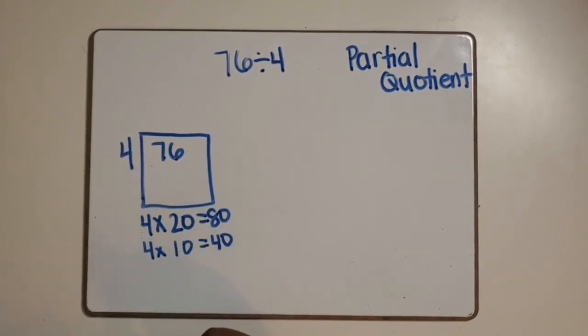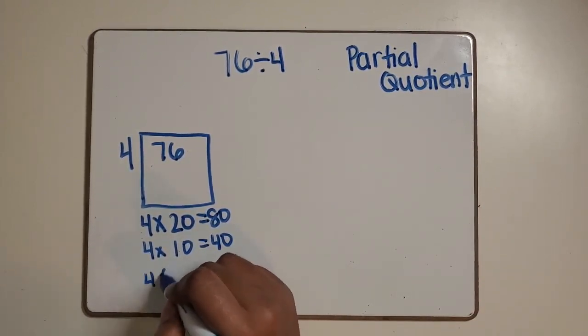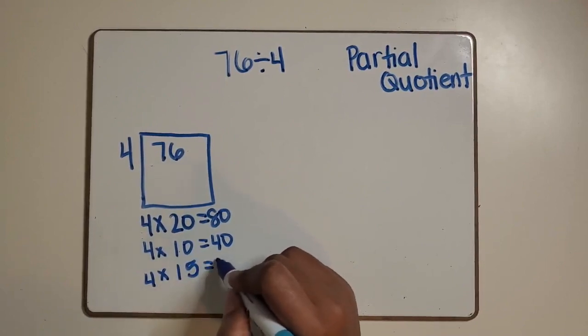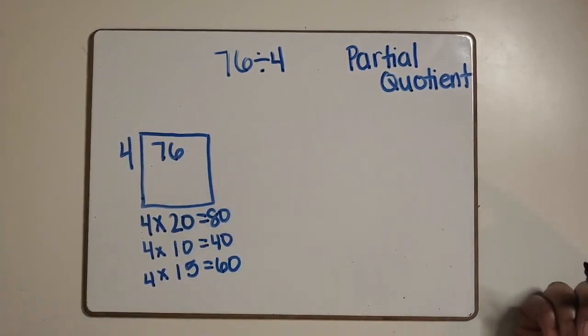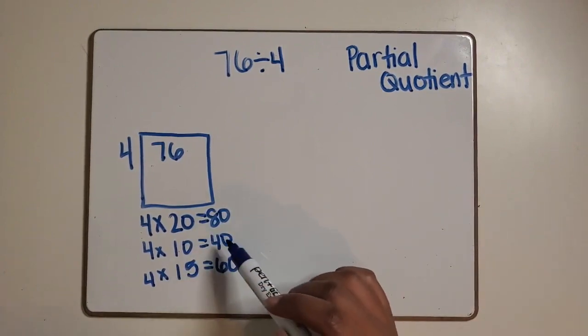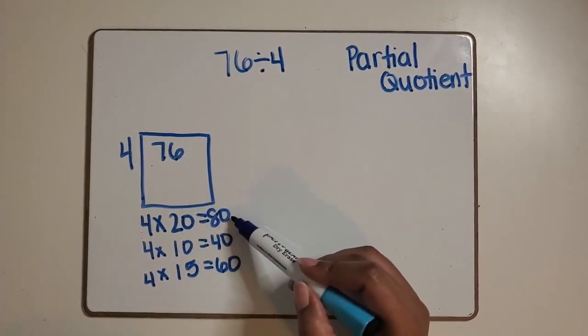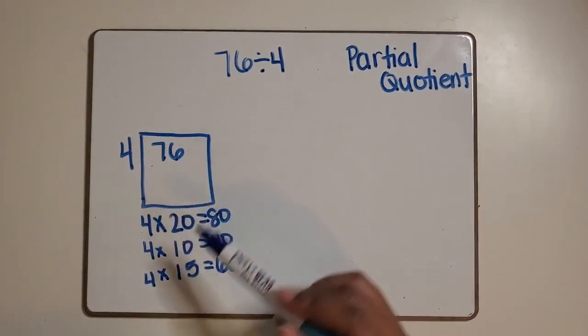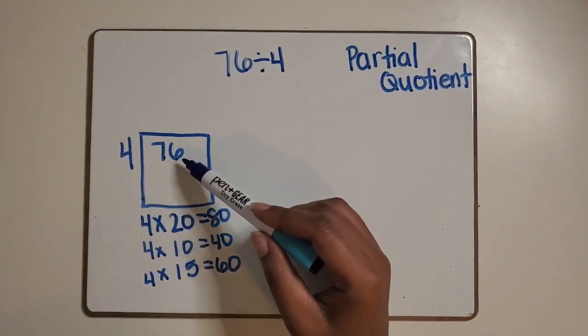What about four times 15 equals 60? Out of the multiplication facts that they do know, four times 20 equaling 80 will take them past their total because it is greater than 76.